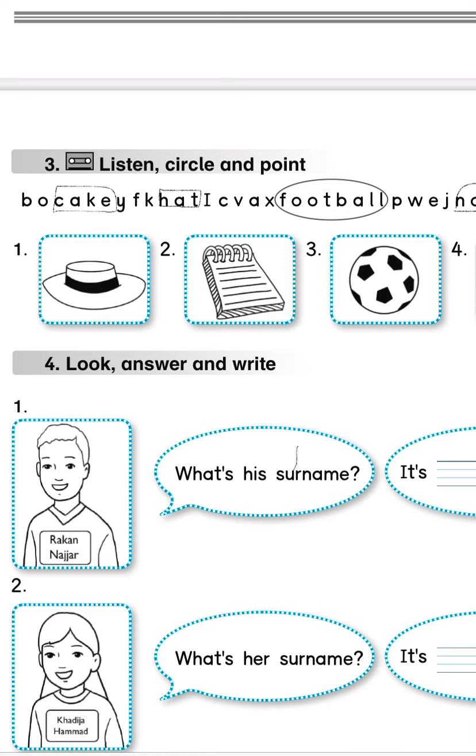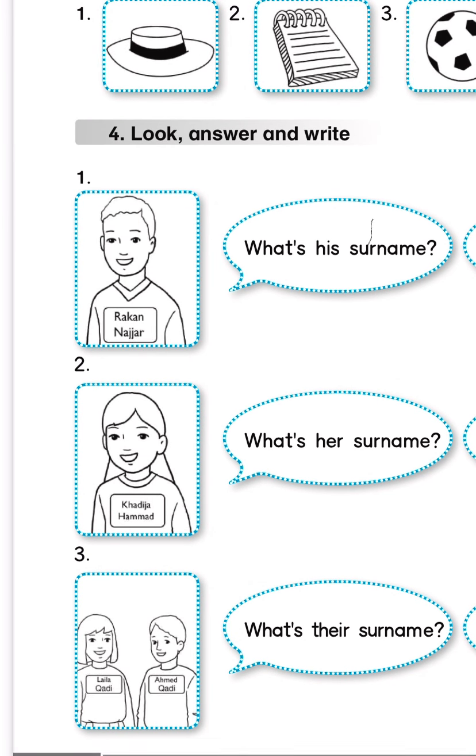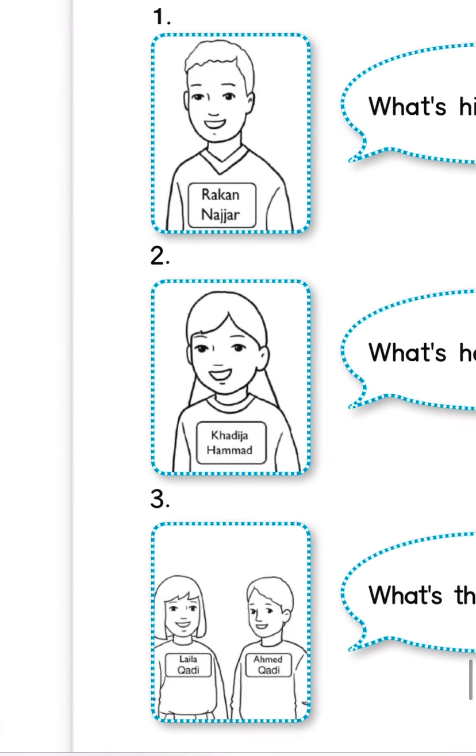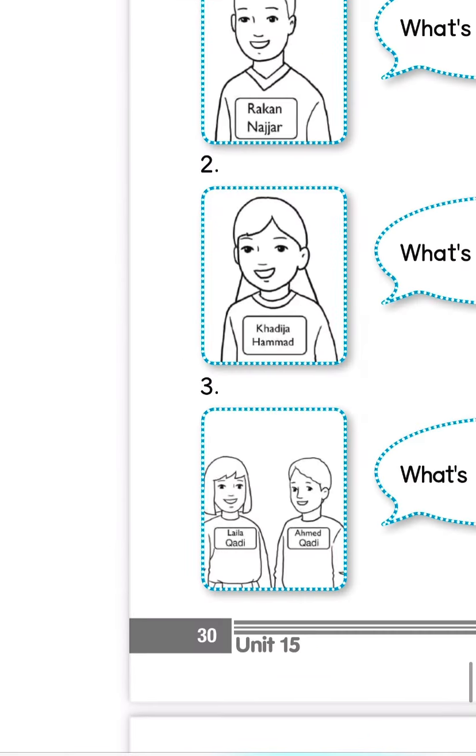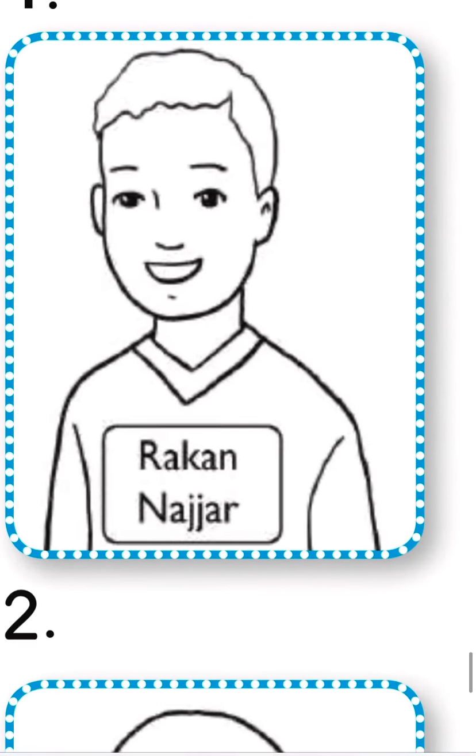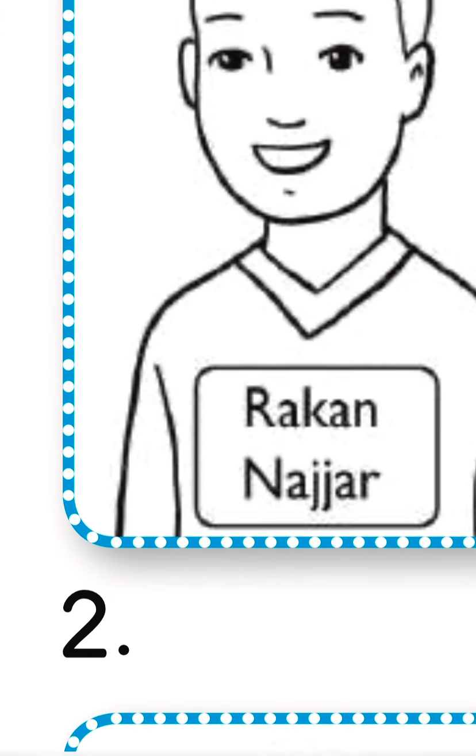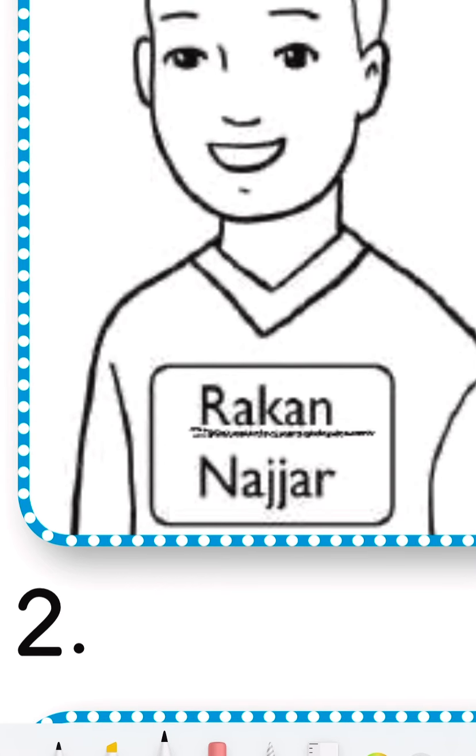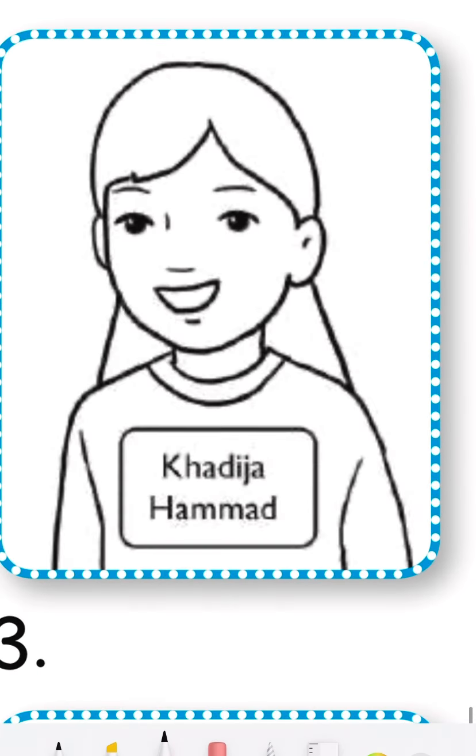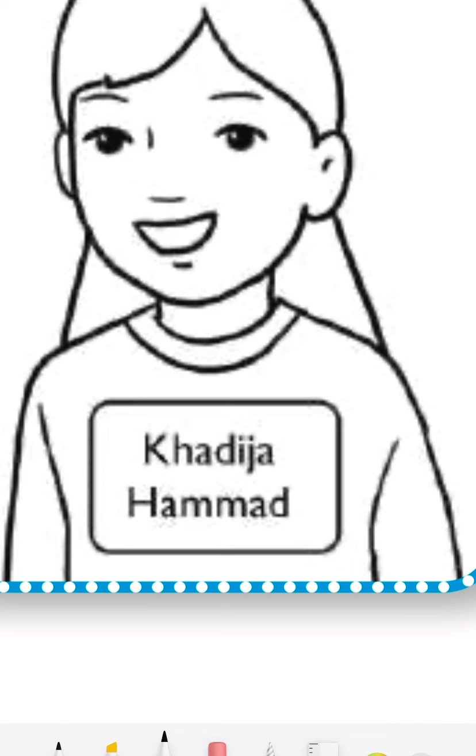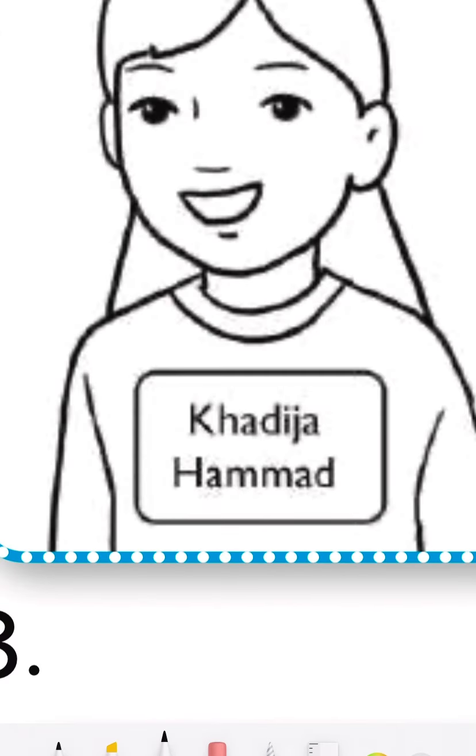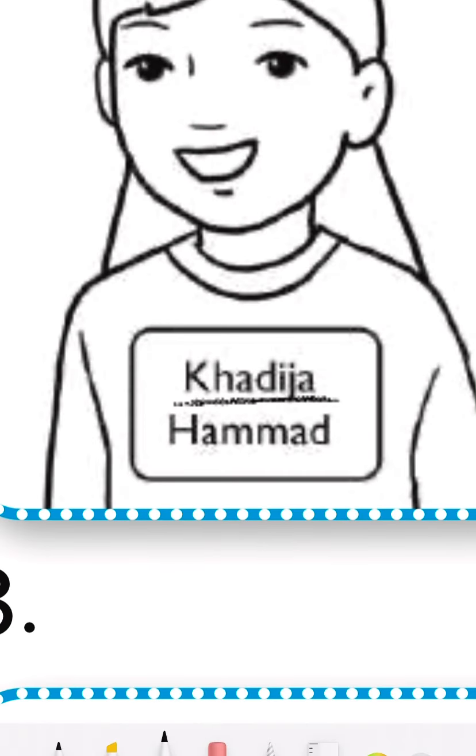What about exercise number four? Let's jump to it. Exercise number four. We have Rakan, Khadija, Layla, and Ahmed. Let's spell their names. Rakan: R-A-K-E-N. Number two, we have Khadija. When you see K and H, we pronounce them as kh. The letters K and H together, we pronounce kha. Khadija: K-H-A-D-I-J-A.